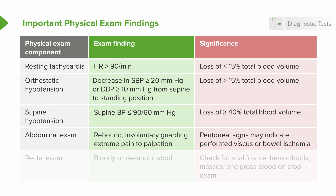Perform a focused abdominal exam, looking for rebound tenderness, involuntary guarding, or extreme pain on palpation — signs of peritonitis, which occurs with a perforated organ or bowel ischemia. Always perform a rectal exam, looking for grossly bloody or black melanotic stool, as well as anal fissures, hemorrhoids, or rectal masses that can help focus the differential.